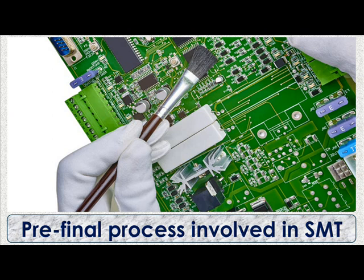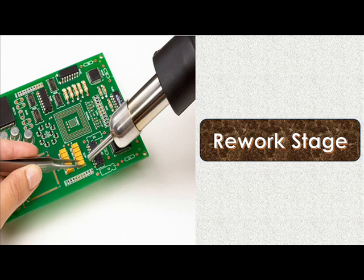Inspections look for missing components, alignment issues, or soldering issues that could generate potential problems. There is equipment available to automate these inspections. Inspected boards then proceed to any required testing of circuits and functionality. Finally, the boards are visually inspected for missing or misaligned components and solder bridging. If needed, they are sent to a rework station where a human operator repairs any errors, and then sent to testing stations for in-circuit testing and functional testing to verify correct operation.